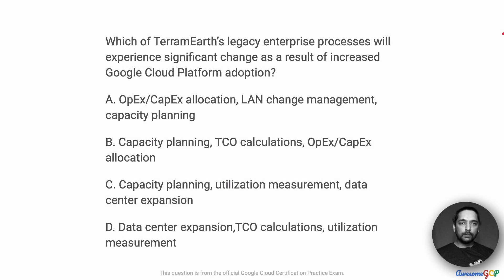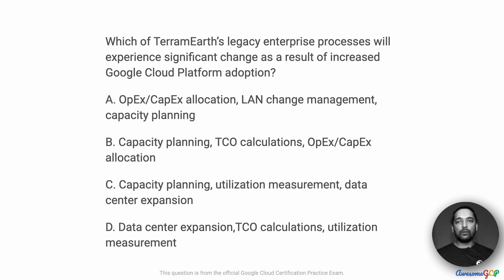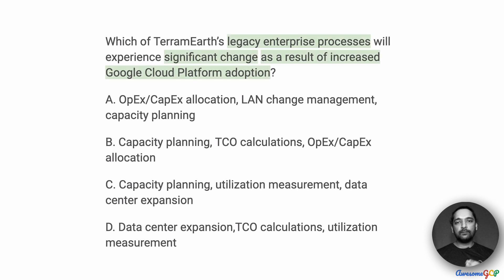This project scenario is based on the TerramEarth case study. Which of TerramEarth's legacy enterprise processes will experience significant change as a result of increased Google Cloud Platform adoption? We're given a list of items and we need to figure out which of these items is going to cause a significant change in the new process after adopting Google Cloud Platform, as opposed to the legacy enterprise processes.